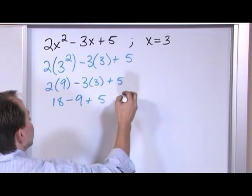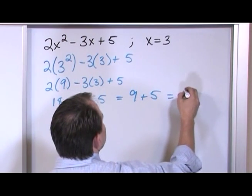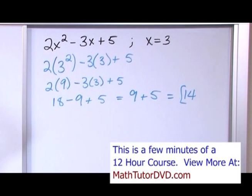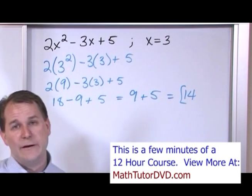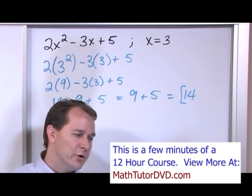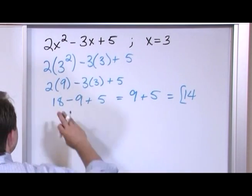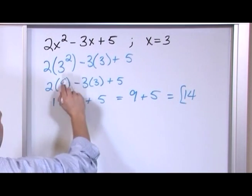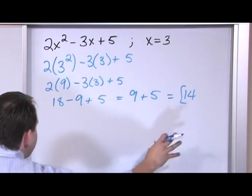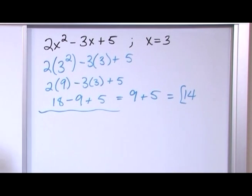18 minus 9 gives me 9, and then adding 5 gives a final answer of 14. In easier problems a student might try to calculate in their head, but if you attempt that you're just asking for trouble — eventually you'll make an error. Unless you have an extraordinary memory, you can't keep all of this straight. You really need to write every step down, because if you make a mistake you can go back and find exactly where you went wrong. If you don't leave a nice trail of steps, you'll never be able to figure out what you've done wrong.